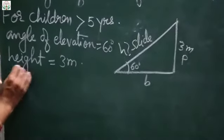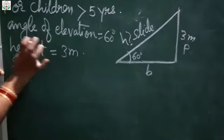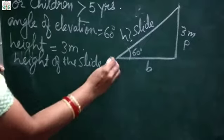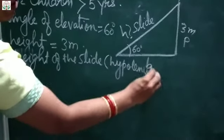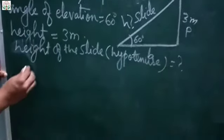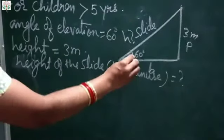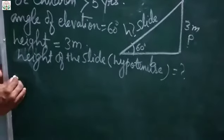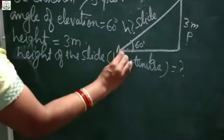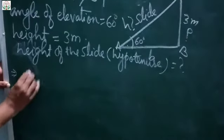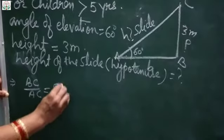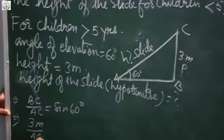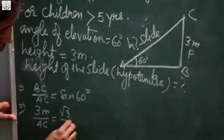According to trigonometric ratios, angle is given and P is given; we have to find H. P upon H equals to sine 60. So BC upon AC equals to sine 60. BC is given as 3 meter upon AC equals to sine 60, which is root 3 upon 2.